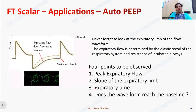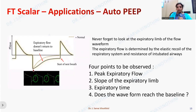For the expiratory part of the flow-time waveform, we need to examine: the peak expiratory flow, the slope of the expiratory limb, the expiratory time, and whether the expiratory waveform touches the baseline. If the expiratory waveform does not touch the baseline, it could indicate auto-PEEP — meaning some air is still retained in the patient's lungs and has not been completely expired. Always check the expiratory part of the waveform for these four parameters.